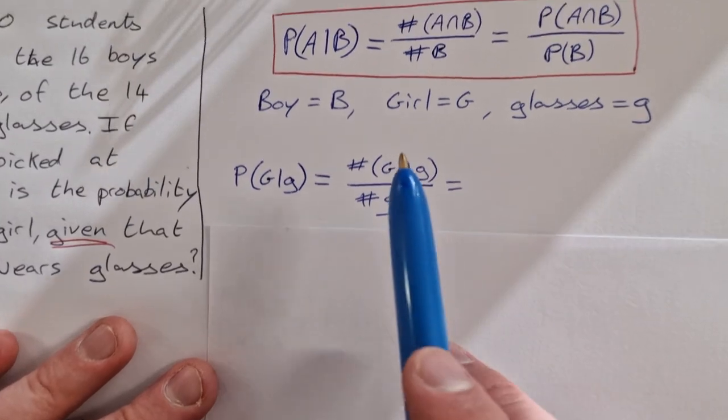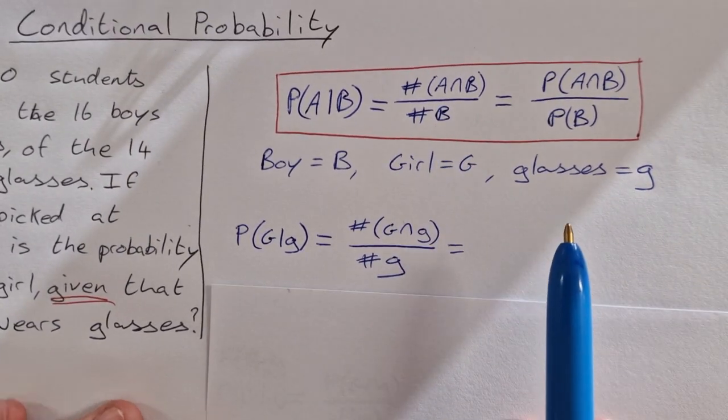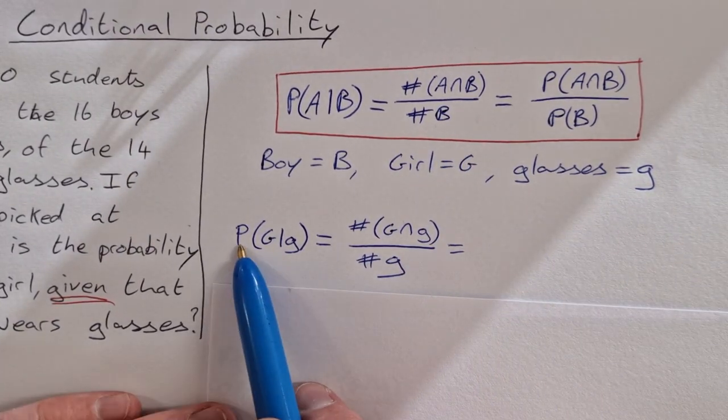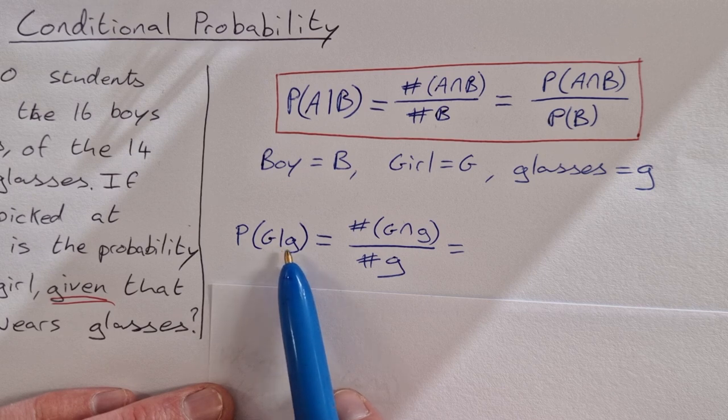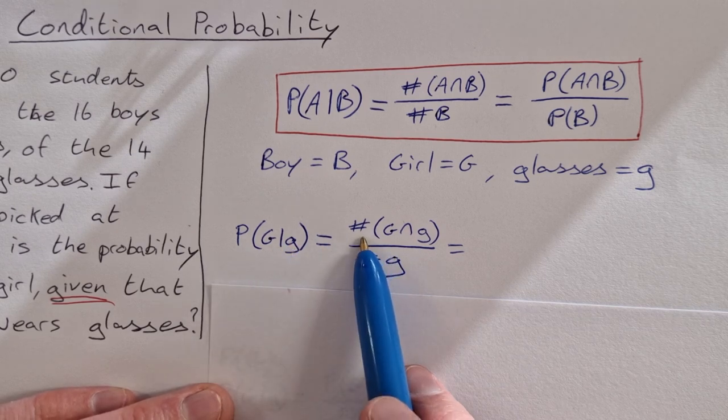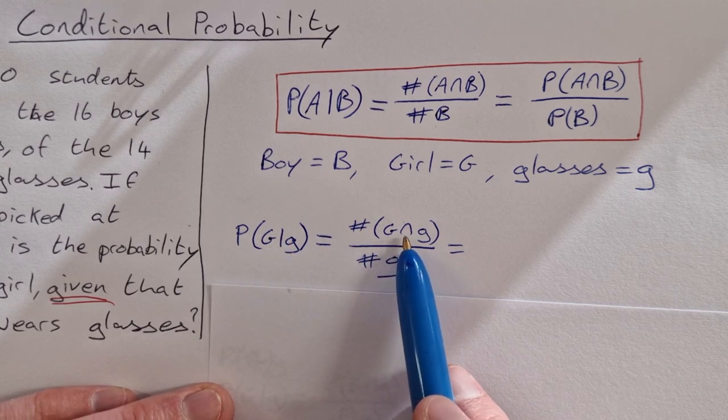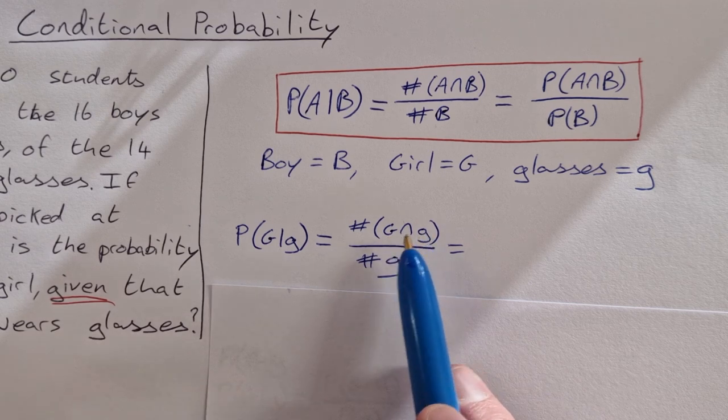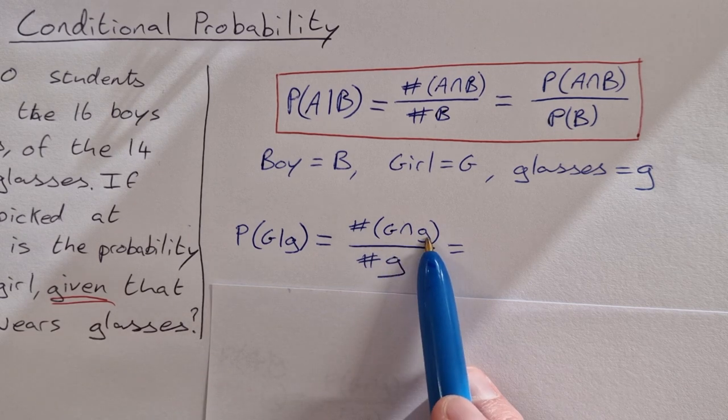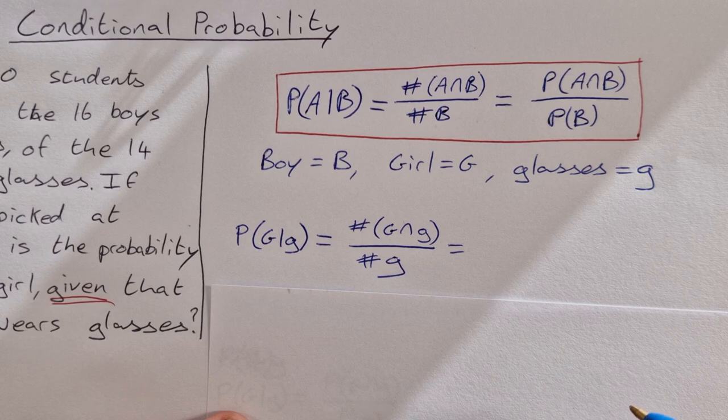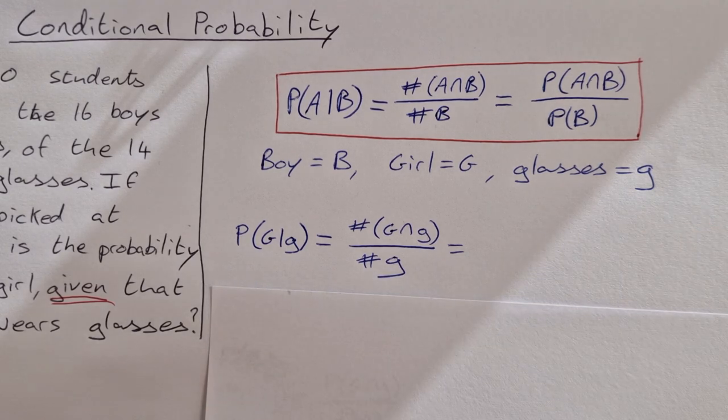So the first way, using the first bit of the formula here, the probability of girl given glasses, that is equal to the cardinal number of G intersection g, girls intersection glasses. So that means how many girls are there that wear glasses?